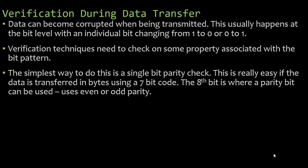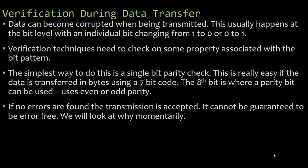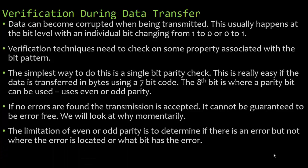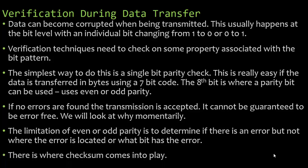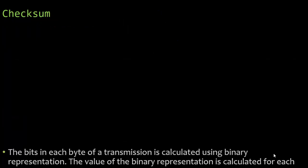If no errors are found, the transmission is accepted — though it cannot be guaranteed to be error free. The limitation of even or odd parity is that it can determine if there is an error but not where the error is located. That's where checksum comes in: by using checksum, because each bit has a different value, you can calculate it and see if it matches the value that was transmitted.